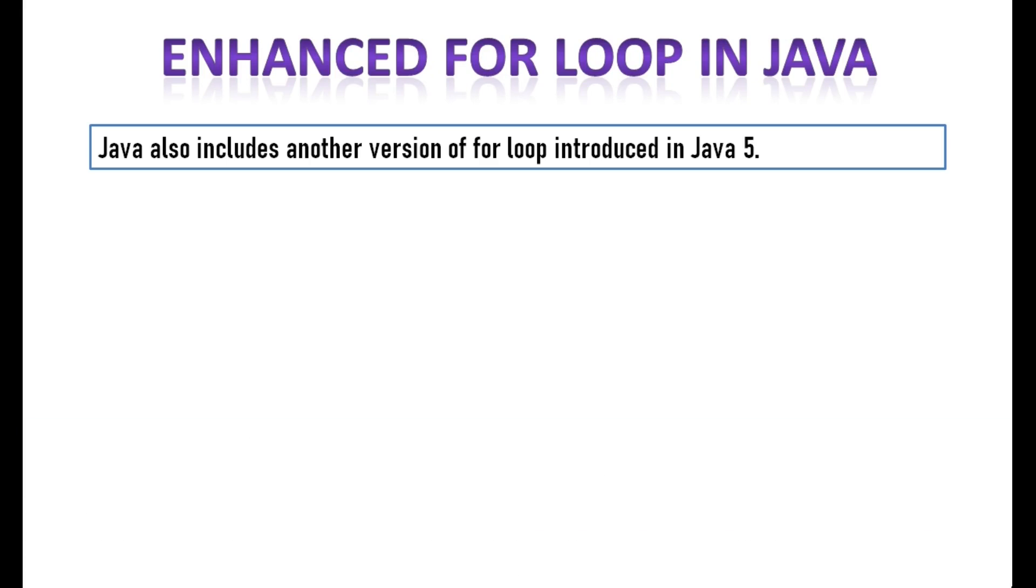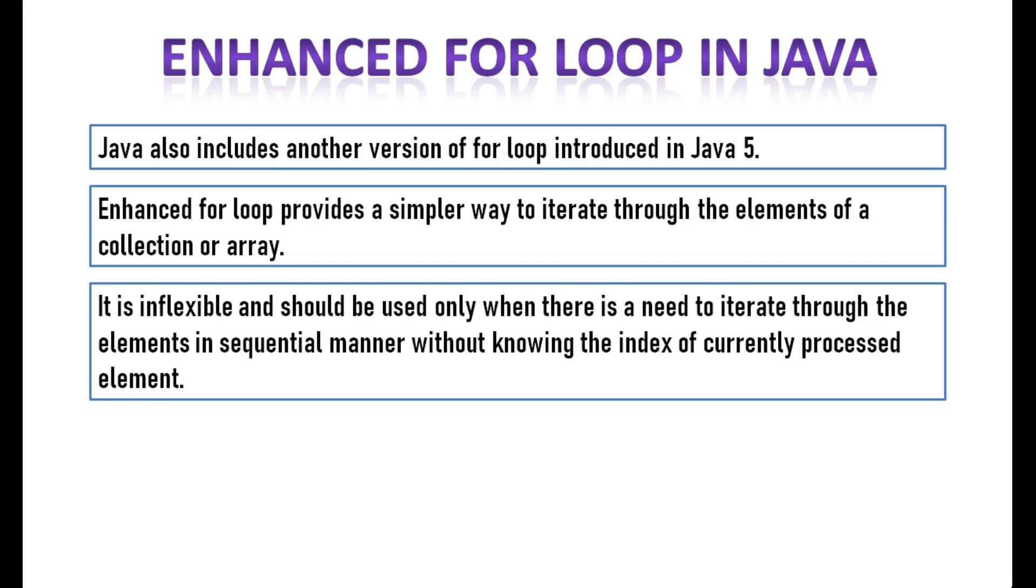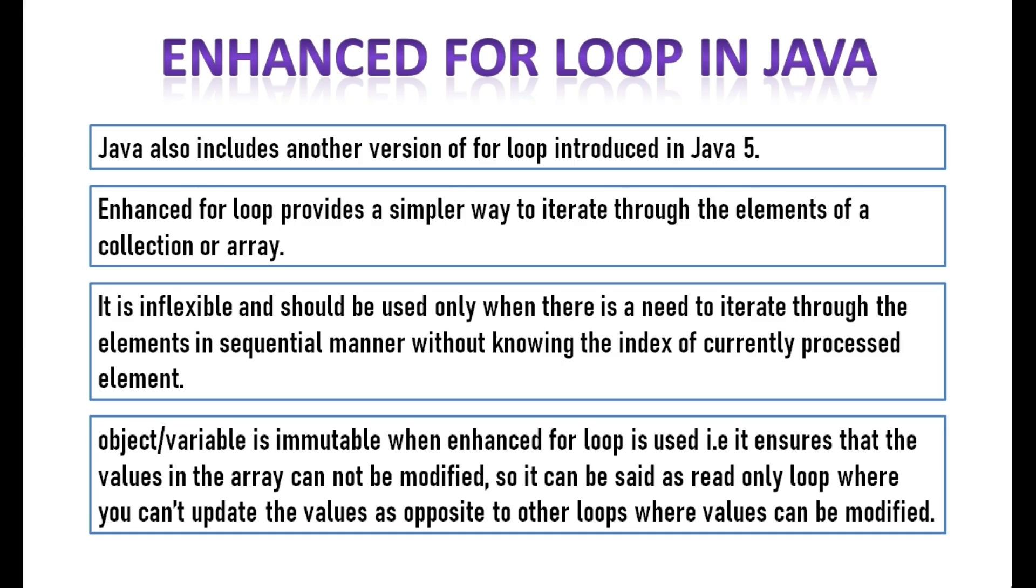Second type of for loop is enhanced for loop. Java also includes another version of for loop introduced in Java 5. Enhanced for loop provides a simpler way to iterate through the elements of a collection or array. It is inflexible and should be used only when there is a need to iterate through the elements in sequential manner without knowing the index of currently processed element. Also note that the object variable is immutable when enhanced for loop is used. It ensures that the values in the array cannot be modified.